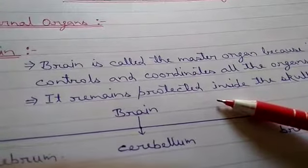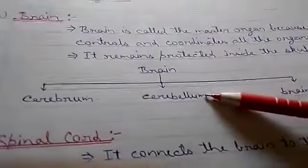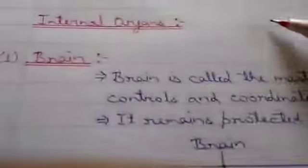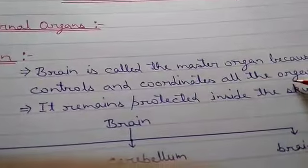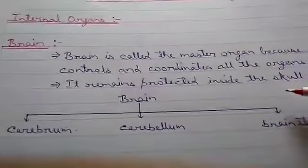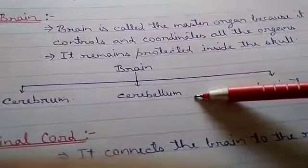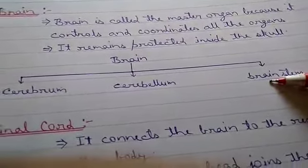The brain remains protected inside the skull. The brain has three parts: cerebrum, cerebellum, and brainstem. As you can see in this picture, this is the skull, and inside the skull is the brain with its three parts.